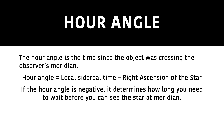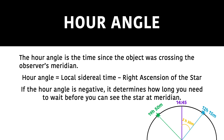Looking at this diagram, we can see that a star at 19 hours 50 is yet to culminate and will culminate in five hours and five minutes. However, if we look at a star at 12 hours 15, it has already culminated and it has been two hours 30 minutes since it culminated. So if the hour angle is negative, the star is yet to culminate, and it determines how long you need to wait before you can see the star at your meridian.